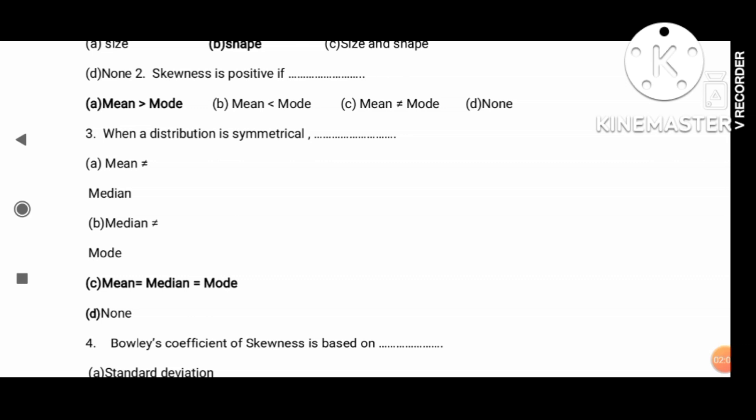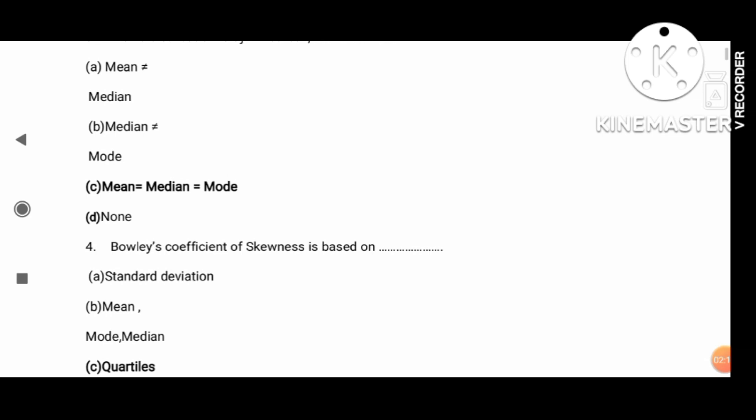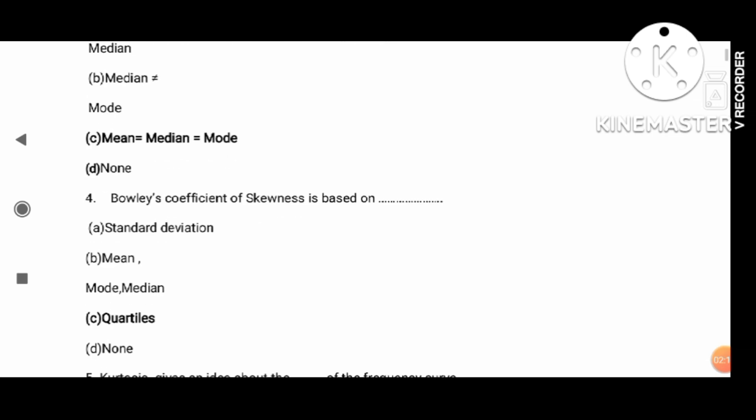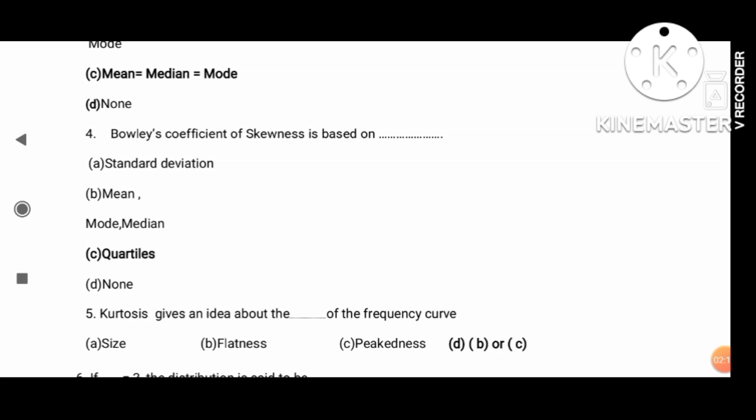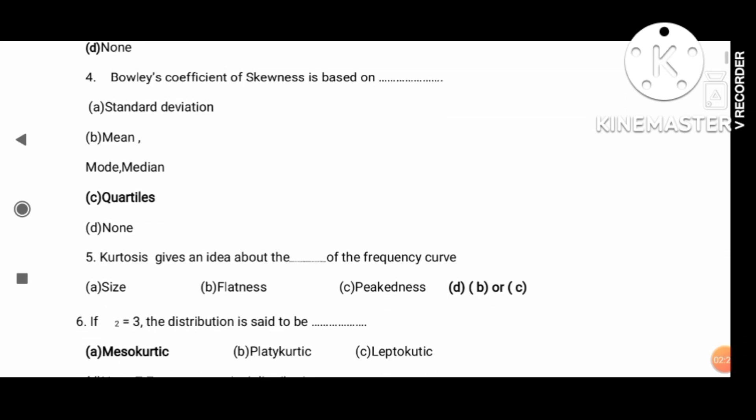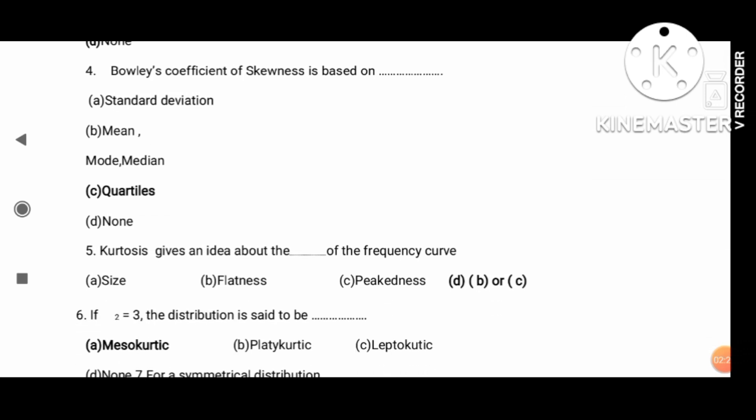Skewness is positive when mean is greater than mode. That is the fourth question. Bowley's coefficient of skewness is based on quartiles. The formula is Q1 divided by 4, 3 into Q.